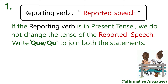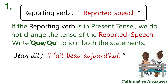Rule number one: if the reporting verb is in present tense, we do not change the tense of the reported speech. Just write 'que' to join both the sentences. For example, 'jean dit il fait beau aujourd'hui.' In this statement, 'jean dit' means the reporting verb is in present tense, so we are not going to change the tense of the reported speech.